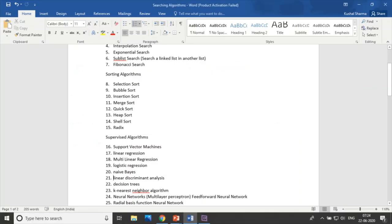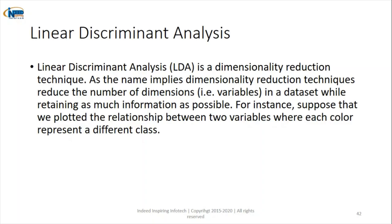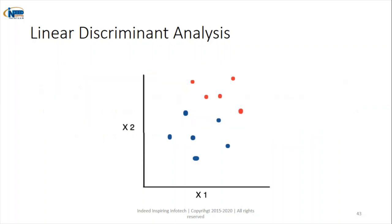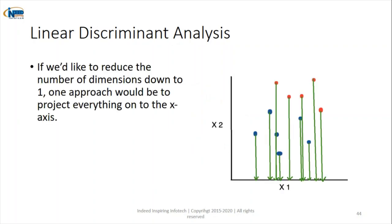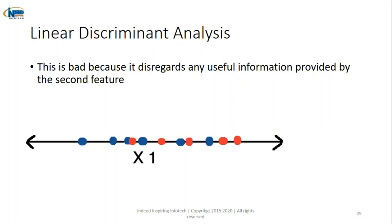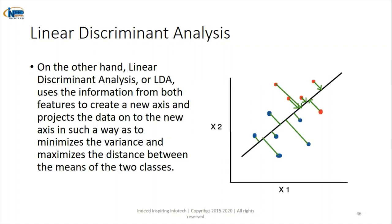The twenty-first algorithm is Linear Discriminant Analysis (LDA), a dimensionality reduction technique. In the diagram, we have x1 and x2 axes with data points plotted. If we reduce dimensionality to one dimension naively, we lose useful information. LDA considers both x1 and x2 and finds the differences and distances between all points to reduce dimensions without losing information. LDA is a dimensionality reduction technique.